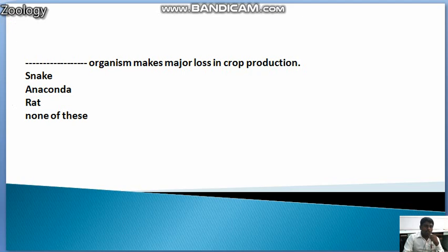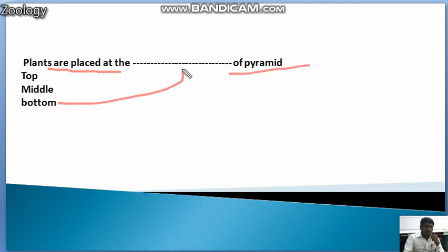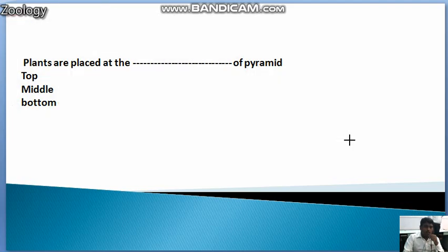The next question: Plants are placed at the blank of pyramids. Plants are placed at the bottom of pyramids, because they are the autotrophs — they produce energy. This is the answer to that question.